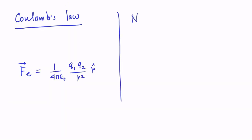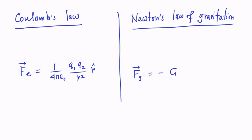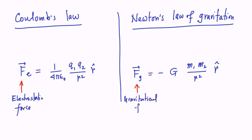Now let us compare Coulomb's law with Newton's law of gravitation. In particular, the gravitational force between particle one and particle two is given by F_g equal to minus G times m1 times m2 over r-squared times r-cap. Here the electrostatic force is represented by the vector F_e, and the gravitational force by the vector F_g. The term 1 over 4π epsilon-naught is known as the electrostatic coupling constant.